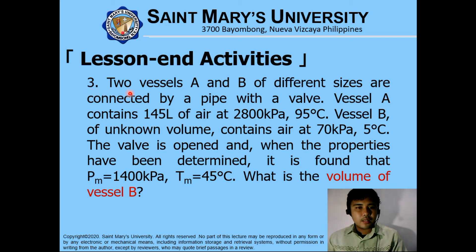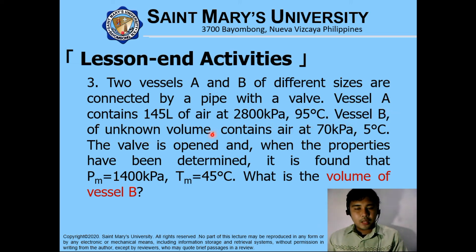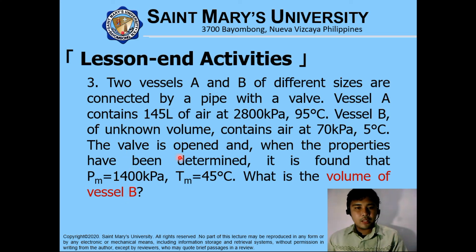For your last lesson activity, you will be finding the volume of vessel B. Two vessels, A and B, of different sizes are connected by a pipe with a valve. Vessel A contains 145 liters of air at 2,800 kilopascal and 95 degrees Celsius. Vessel B of unknown volume contains air at 70 kilopascal at 500 degrees Celsius. When the valve is opened, the mixed pressure is 1,400 kilopascal and the mixed temperature is 445 degrees Celsius. Find the volume of vessel B when the valve is open. This formally ends our presentation for today. Thank you and have a good day.